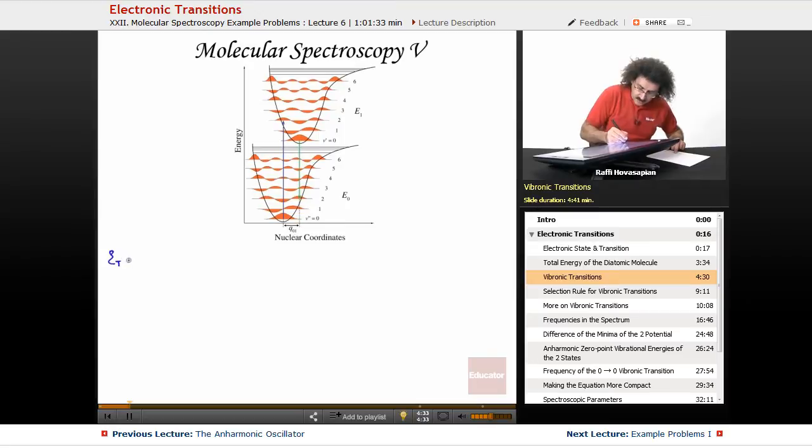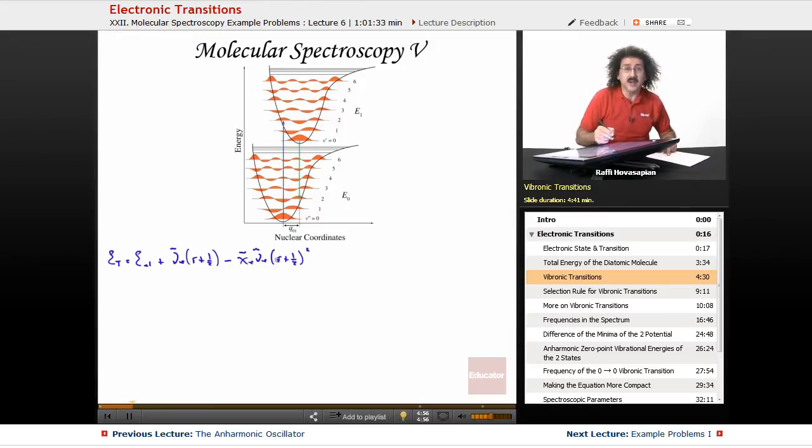E total equals E electronic, plus we have nu sub E times (v plus 1/2) minus X sub E, nu sub E times (v plus 1/2) squared. This is the vibrational energy, under the anharmonic oscillator, plus B times J times (J plus 1), minus D times J squared times (J plus 1) squared. This is the rotational energy, the non-rigid rotator, that accounts for the centrifugal distortion.